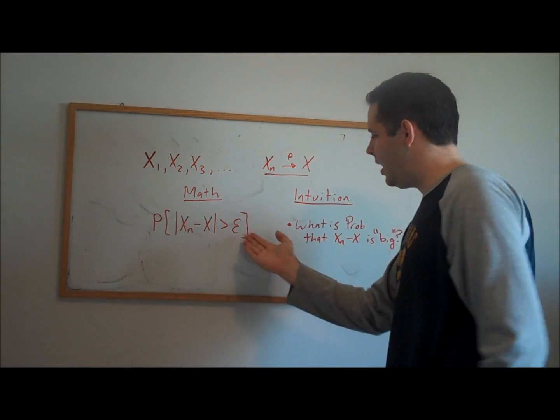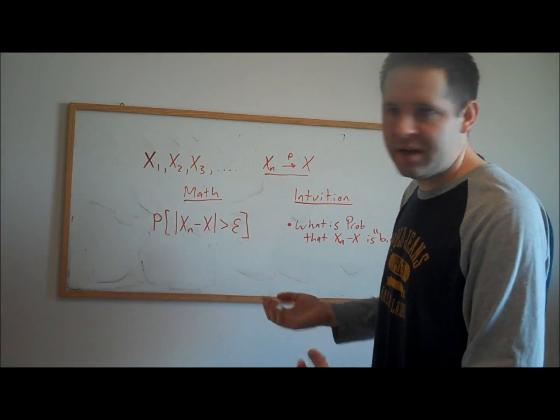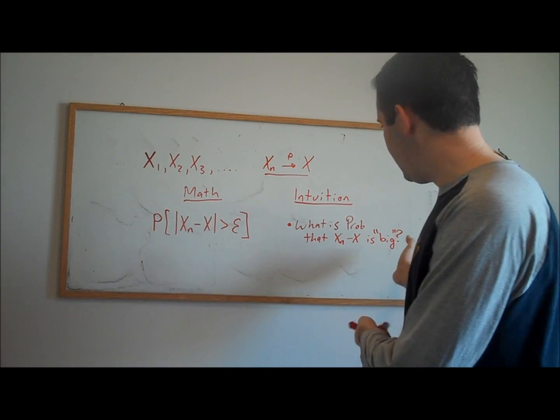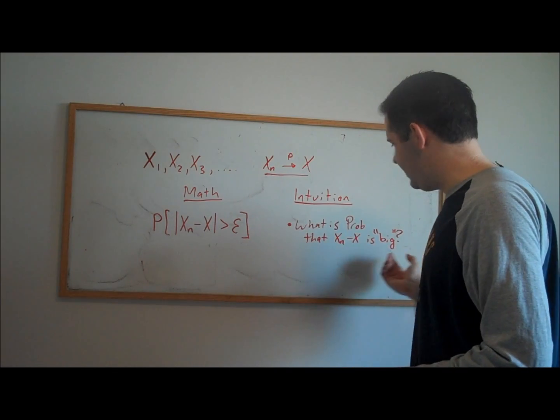We do this for any epsilon bigger than zero. Bigger than epsilon means big. Smaller than epsilon means small. We ask, what's the probability that this difference is big?